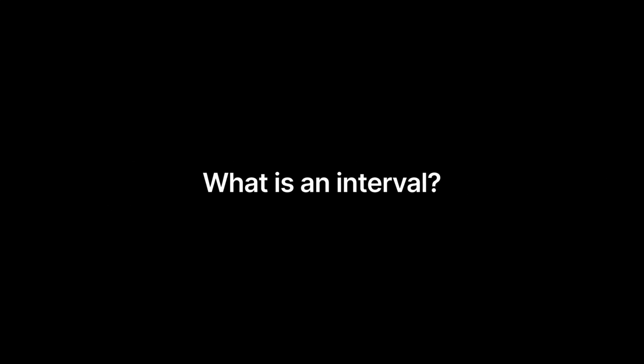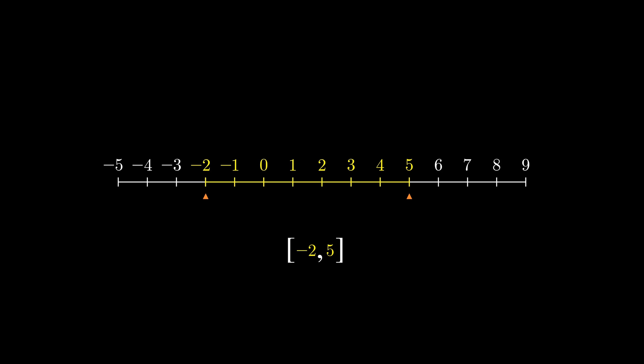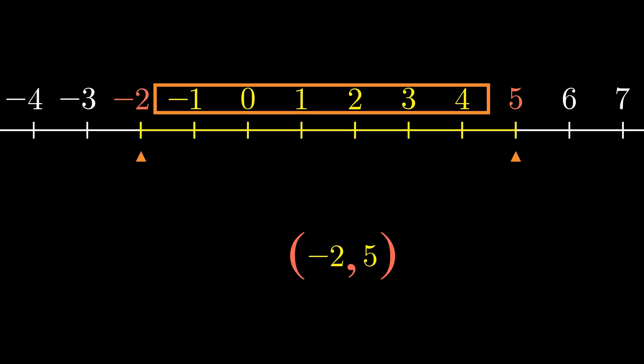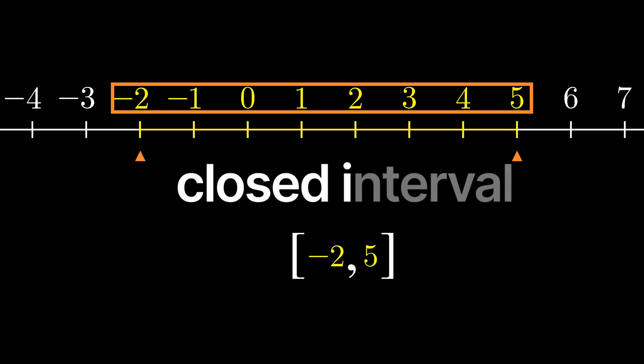So what is an interval? An interval is just a subset of a number line. So if we have a number line here, we can say that a subset of this number line or an interval on this number line starts at negative 2 and ends at 5. And we'd represent that in interval notation like so. So this interval represents a set of numbers lying between negative 2 and 5. Now the set of numbers represented by this interval can either include negative 2 and 5 or they can exclude negative 2 and 5. And in interval notation, we can say that the set of numbers should include negative 2 and 5 by enclosing them in square brackets. This is called a closed interval.